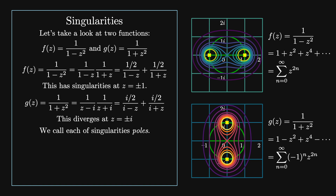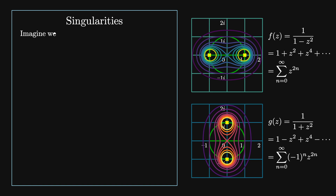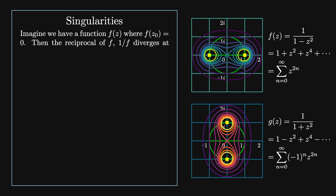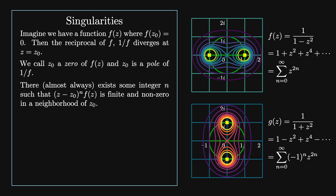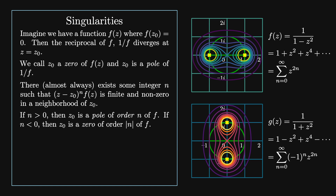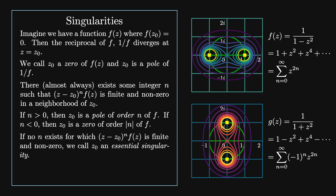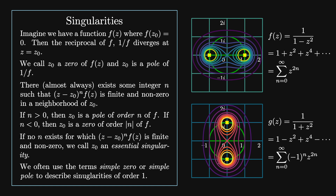Imagine we have a function f of z where f of z0 equals 0; then the reciprocal 1 over f diverges at z equals z0. We call z0 a zero of f and a pole of 1 over f. There almost always exists some integer n such that (z minus z0) to the n times f of z is finite and nonzero in the neighborhood of z0. If n is greater than 0, then z0 is a pole of order n. If n is less than 0, then z0 is a zero of order the absolute value of n. If no such n exists, then we call z0 an essential singularity. We often use the terms simple zero and simple pole to describe zeros and poles of order 1.